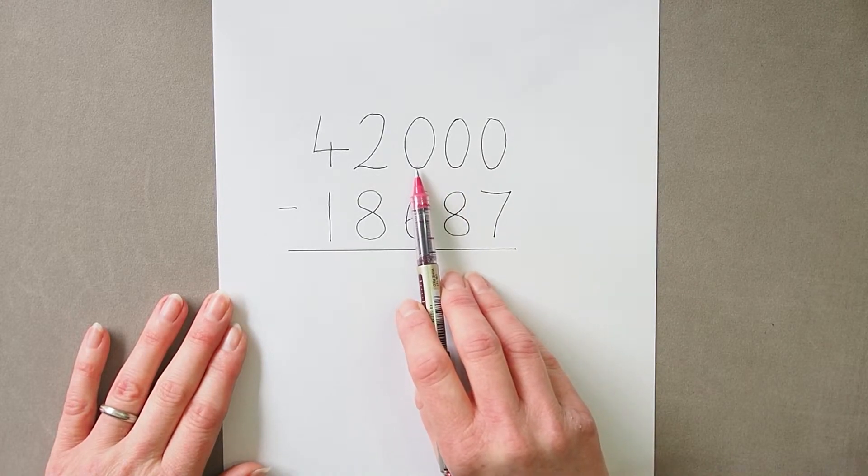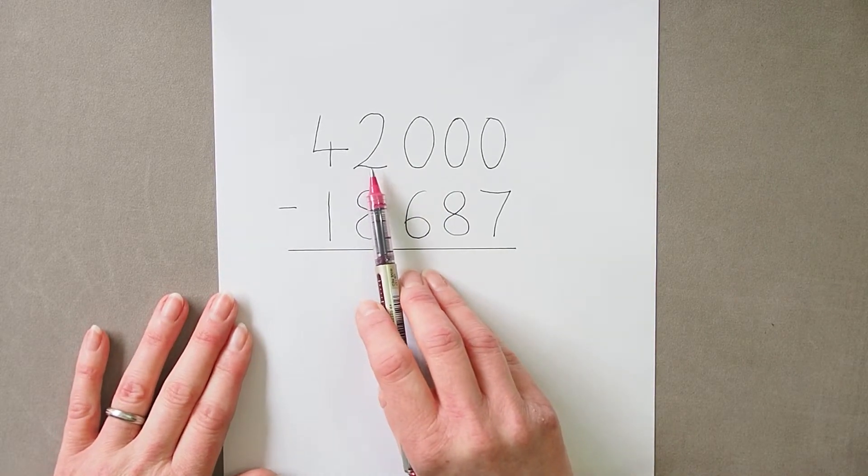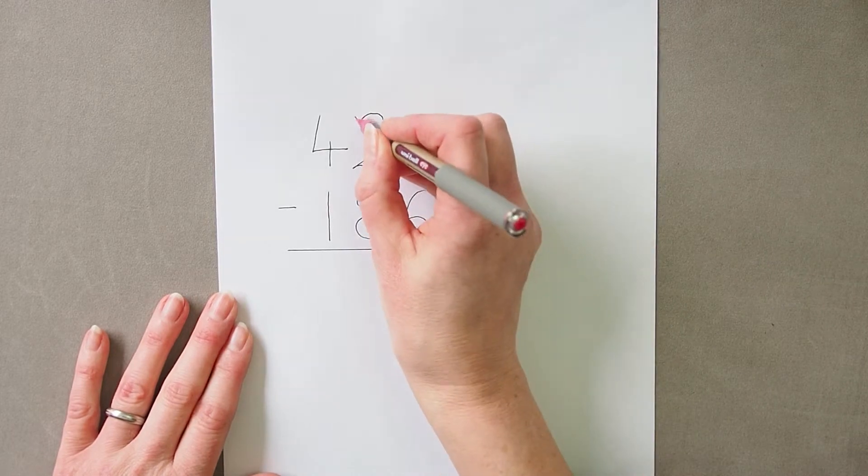There are no hundreds, so we can't exchange any hundreds. So we stop at the first column where we've got a digit we can exchange and this is my thousands column.